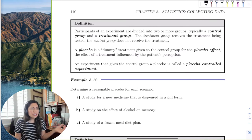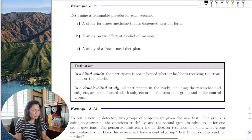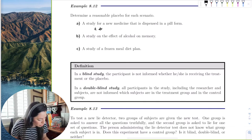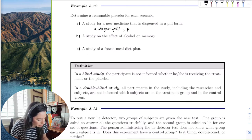So let's see if we can actually determine a placebo for the, it's not always a pill, right? So like a study for a new medicine that is dispensed in pill form. Well, right away, we can always do a sugar pill, right? Which is called sugar pill, which is a placebo pill that you've heard before, I'm sure.